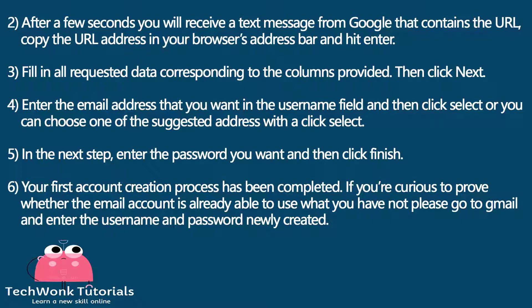Fill in all requested data in the columns provided, then click next. Enter the email address you want in the username field and then click select, or you can choose one of the suggested addresses by clicking select. In the next step, enter the password you want and then click finish. Your first account creation process has been completed. To verify the email account works, go to Gmail and enter the username and password you just created.